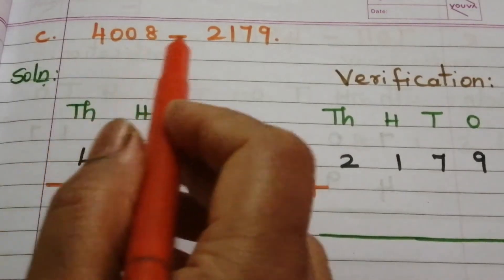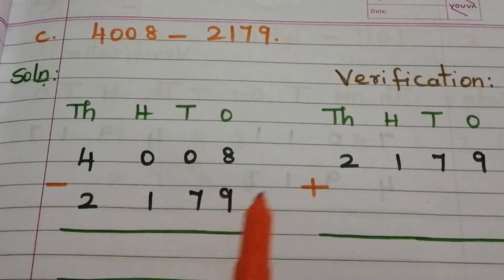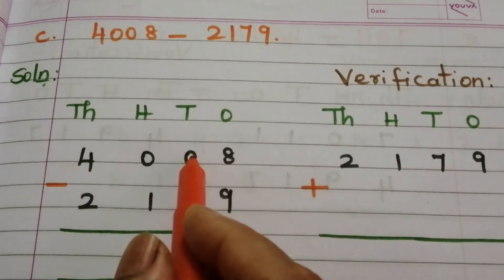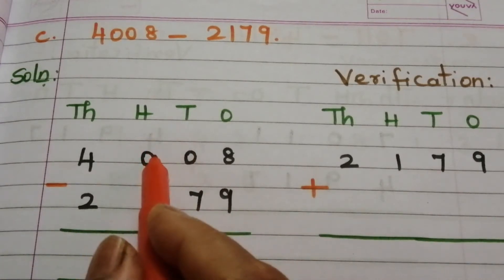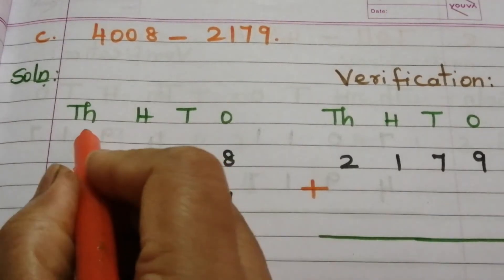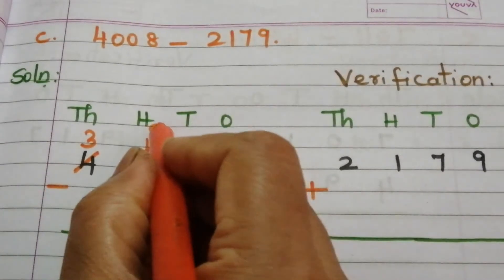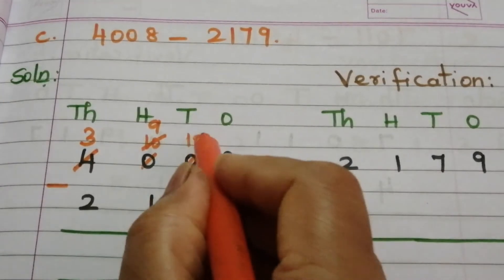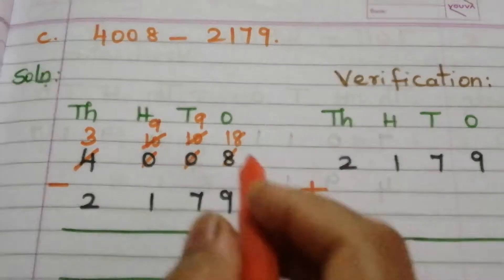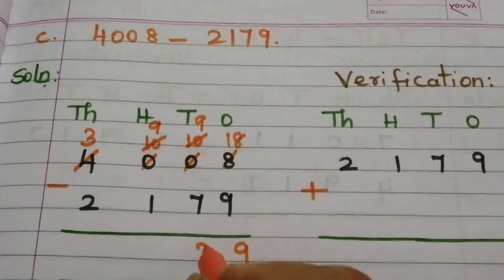Problem C: 4008 minus 2179. Start subtraction from ones place. We can't subtract 9 from 8, so borrow from the tens place — but the value there is 0, so move to the hundreds place — also 0, so move to the thousands place. 4 becomes 3, and that becomes 10. Borrow from this 10: you get 9 and the 0 becomes 10. Borrow again: 9 and this 8 becomes 18.